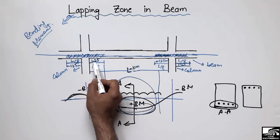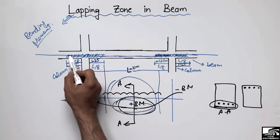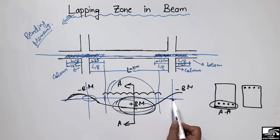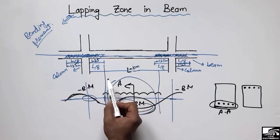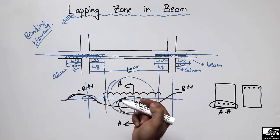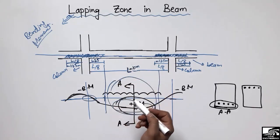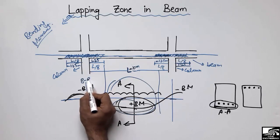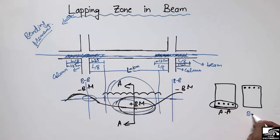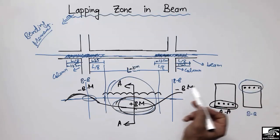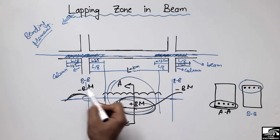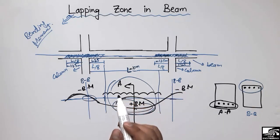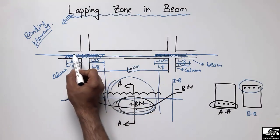So with respect to each support, within 1.25 meters we are allowed to overlap our steel bars, because there is no maximum bending moment at that point. Now, what should be the overlapping condition for the negative bending moment? It is opposite to that of the positive bending moment, because the negative bending moment is maximum at the support section — let's call this section BB.